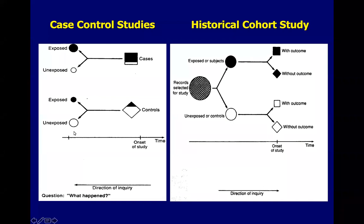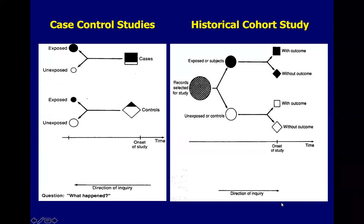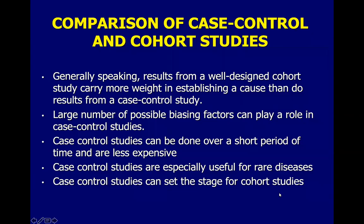In a case control study, patients already have the outcome identified, so you need fewer patients generally. To summarize the difference: in a case control study, we start with the cases and the outcomes, then go back to the exposure. In the cohort study, we start with exposure and look for the outcome. The direction of inquiry in case control studies is backwards — 'What happened?' In the cohort study, it is forward — 'What will happen?' Generally speaking, a well-designed cohort study has more weight in establishing cause than the results from a case control study.